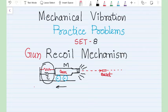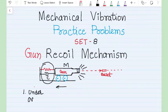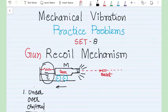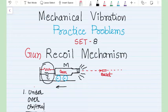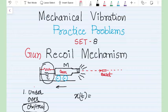The first thing we should understand is that in case of damping there are three types: under-damped, over-damped, and critically-damped conditions. We know that if the system is critically damped it will go back to its original position — the displacement will become zero — in the minimum time. That means whenever we are designing a gun recoil mechanism, our damping should be critical damping.